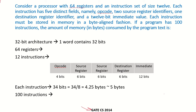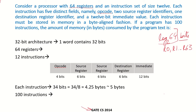We have a processor with 64 registers. If there are 64 registers, we will require log₂(64) bits to address a particular register. So if we call them R0 to R63, in binary format they would require log₂(64) bits to represent them. Log₂(64) is 6 bits. So R0 would be represented as 000000, R1 as 000001, and so on. If there are 64 registers, we need 6 bits to represent each register.